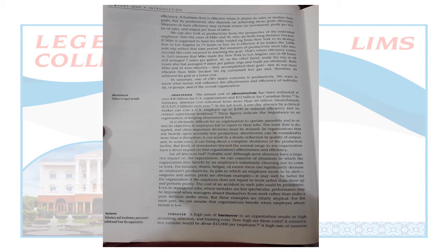Turnover is the third dependent variable — it refers to voluntary and involuntary permanent withdrawal from the organization. Voluntary means leaving on one's own will for any reason — excessive workload, low salary, no promotion, bad behavior from management. When a good employee leaves, the company has to search for another, hire them, train them, and wait for them to reach the same performance level. So turnover is a very significant dependent variable that can create serious issues.